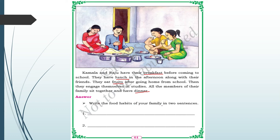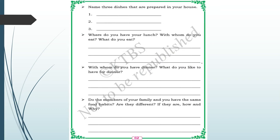Write the food habits of your family in two sentences — for example, 'I eat idli for breakfast. I eat rice sambar for lunch.' Then name three dishes prepared in your house. You can write anything like idli, vada, dosa, chapati, roti, rice, or dal.